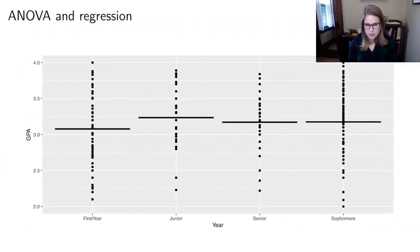So let's think about this example where we're trying to predict someone's GPA based on the year in college they are. So my years aren't in order here. So this is a categorical variable issue from R. But we've got first year, we've got sophomore, junior, and then senior.